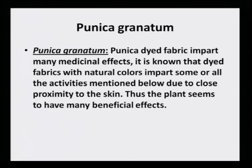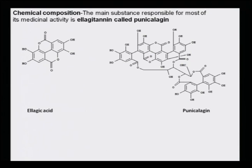Coming to the fourth dye, which is yellow in color, obtained from the rind of the fruit called Punica granatum or pomegranate. This dye also has a lot of medicinal property and being a soothing yellow color it is very popularly used. The main substances responsible for the medicinal property are ellagitannin and punicalagin. These molecules, with several hydroxy groups, are what imparts the medicinal property to the dye.